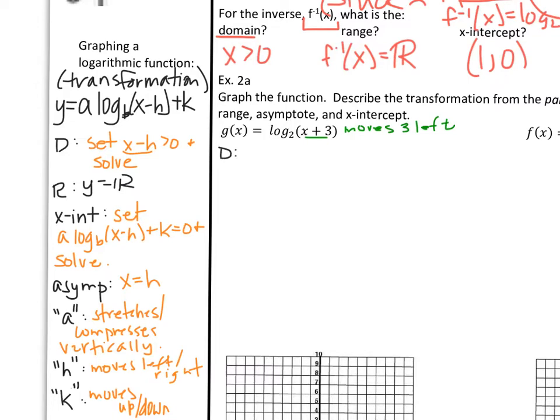So let's get our key features. Our domain, since we have something with x, I'm going to set that greater than 0 and solve for x. If I subtract 3, I get x is greater than negative 3. That's our domain. Our range stays consistent. So g of x is going to equal all real numbers.